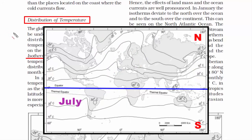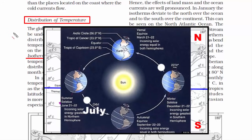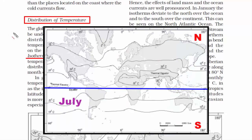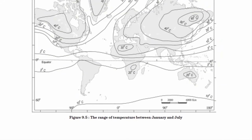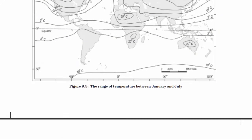Similarly, in the month of July, the northern hemisphere is tilted towards the sun — it is summer in the northern hemisphere and winter in the southern hemisphere. Everything reverses: you will see less bends in the isotherms of the northern hemisphere, but some bends in the temperate and Arctic regions since the sun's angle is low there, causing a slight deviation of isotherms towards the south. In the southern hemisphere, there is less land surface area, so the pattern is similar to what the northern hemisphere experiences in January. This was all about the distribution pattern of temperature on earth's surface.